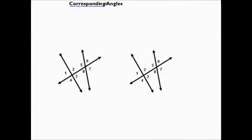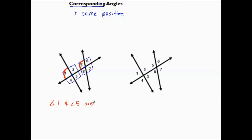Let's begin with corresponding angles. These are angles in the same positions. There are two intersection points, and at each intersection point there are four distinct angles: angle one, angle two, angle three, angle four at the first intersection. At the second intersection we again have four distinct angles. If I look at the left side of the first intersection, that angle is called angle one. On the left side of the second intersection is angle five. Therefore, angle one and angle five are corresponding angles — they are in the same position, both on the left side.